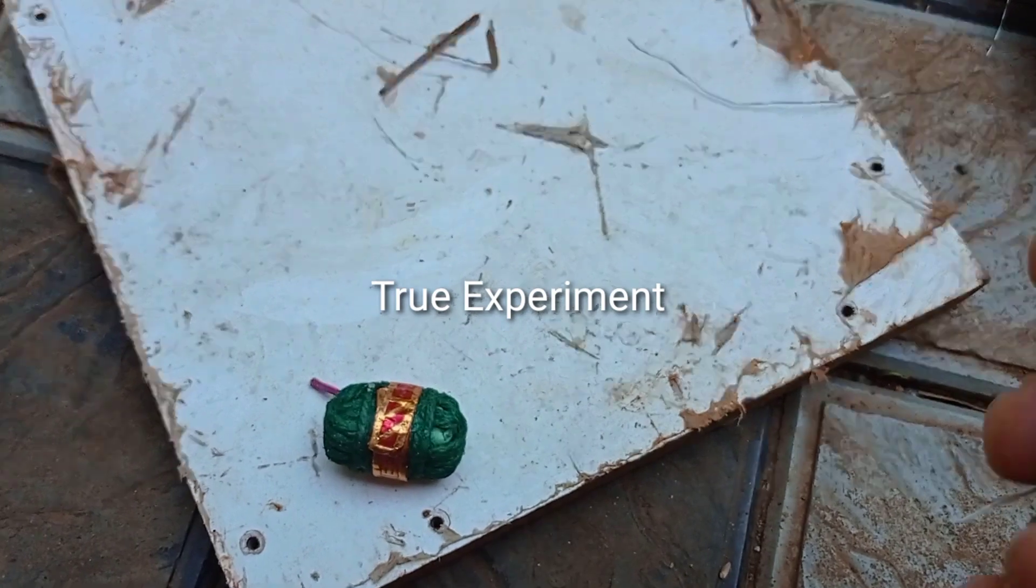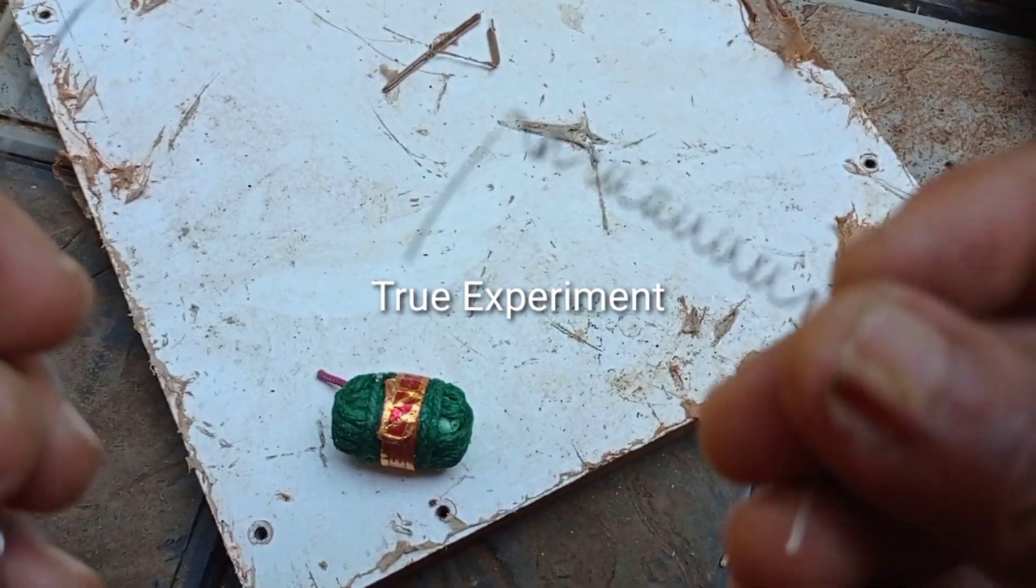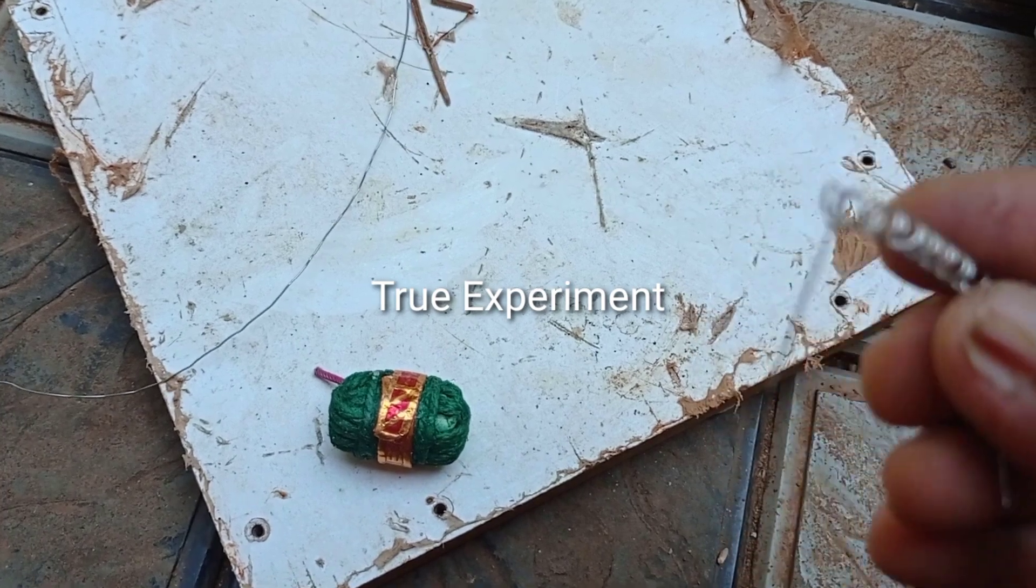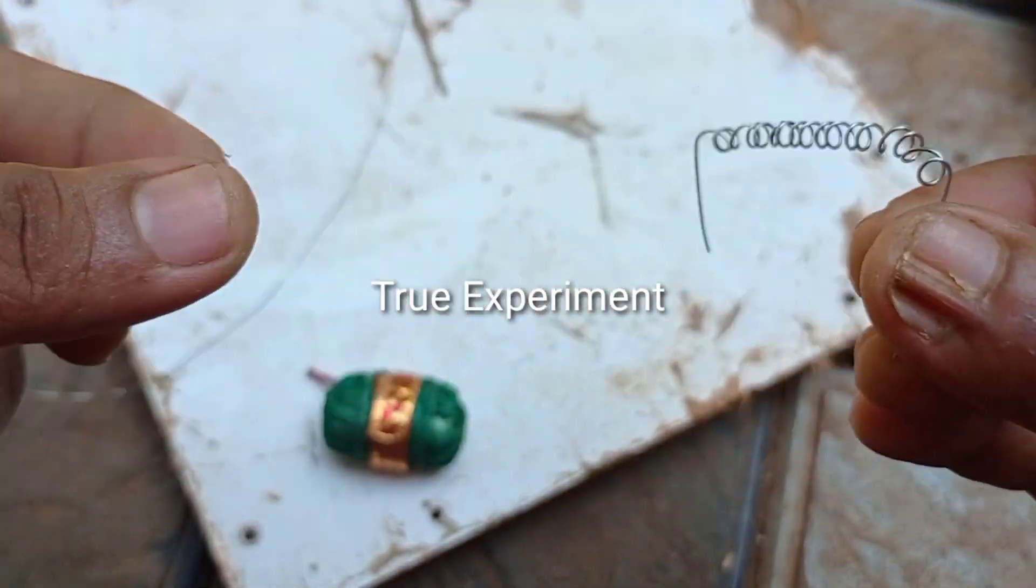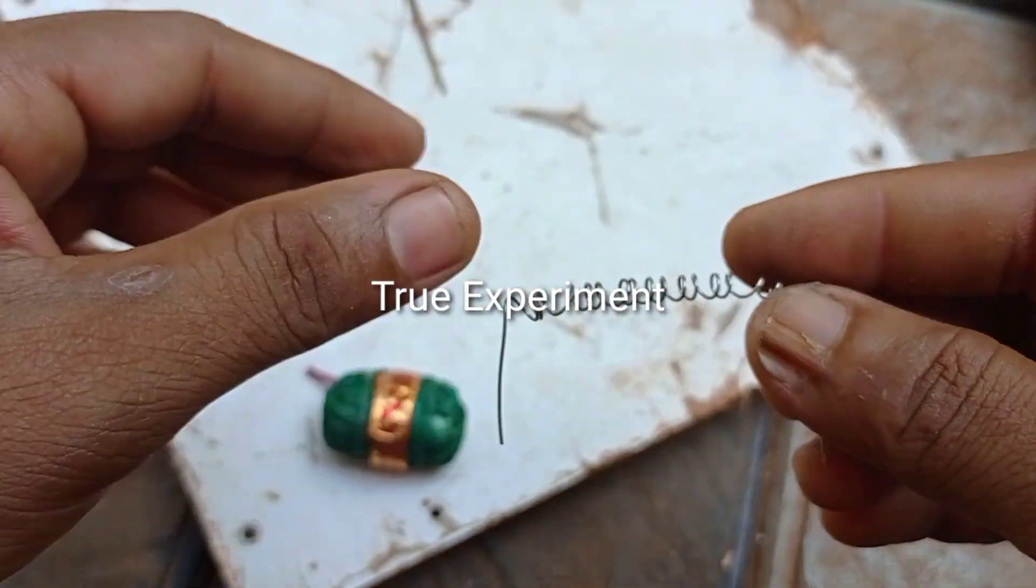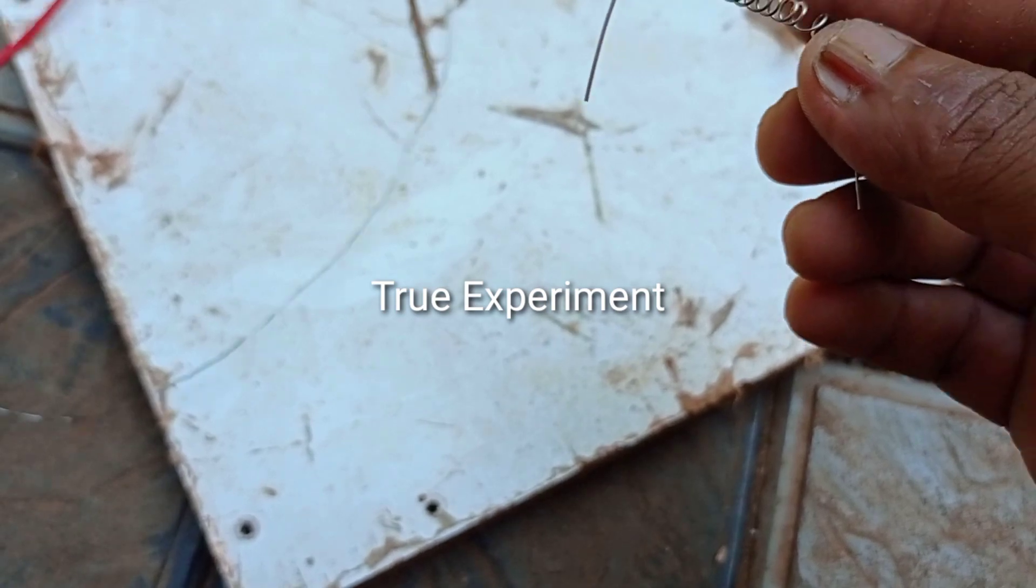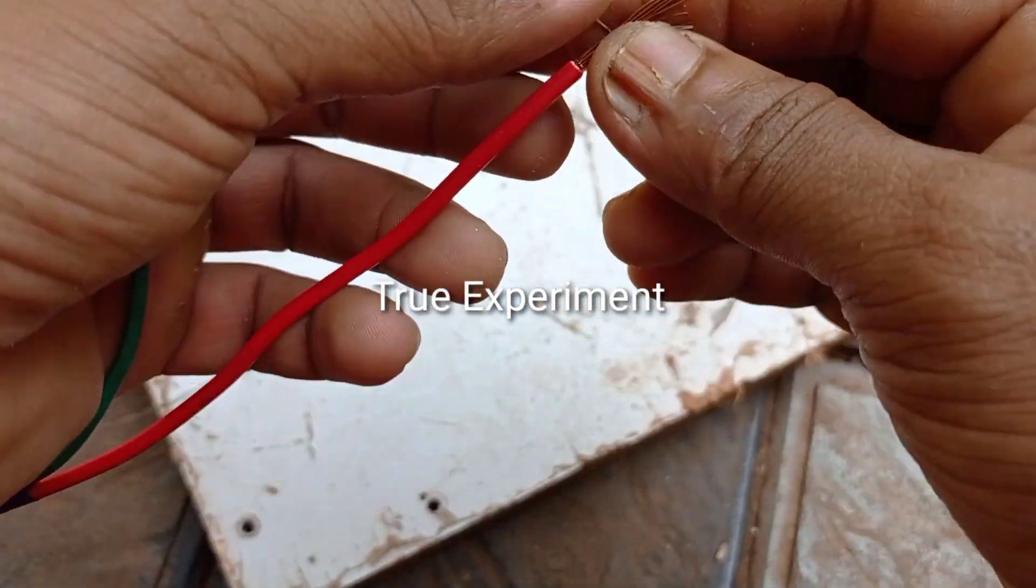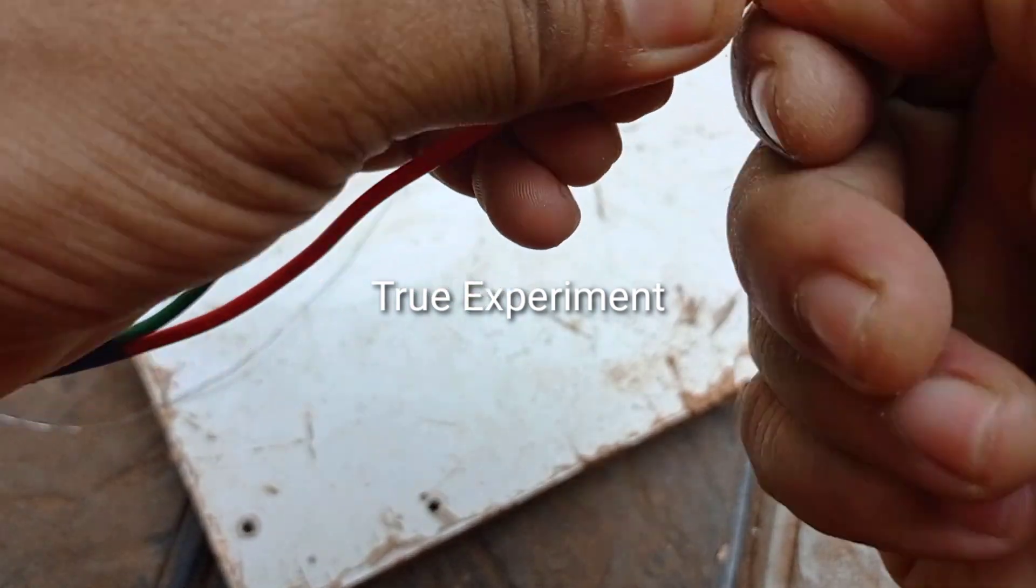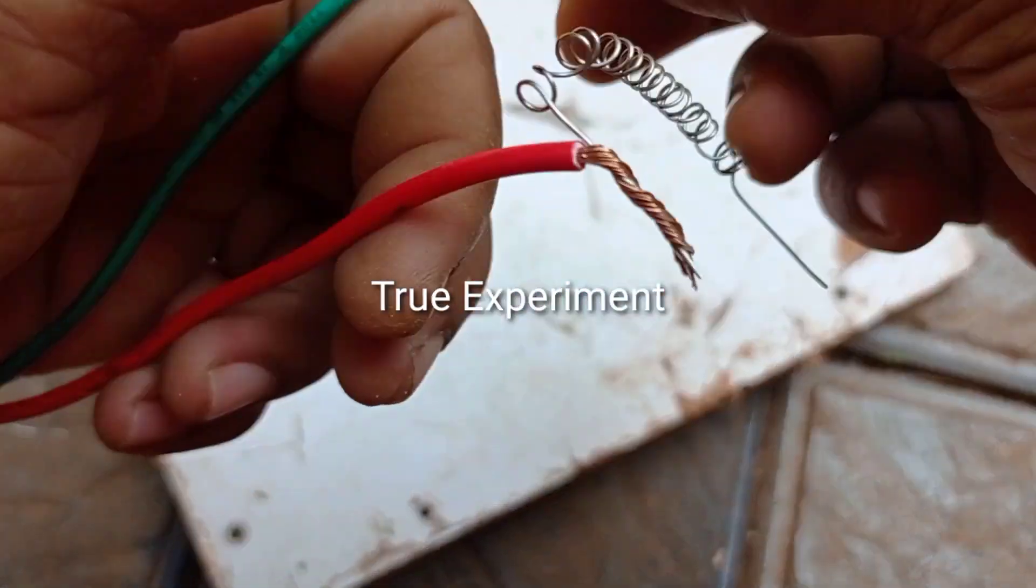This will place the two screws in the same way. We will place the two screws. So we used a spring, and we used to turn the spring. So we used to put a small piece in the spring.